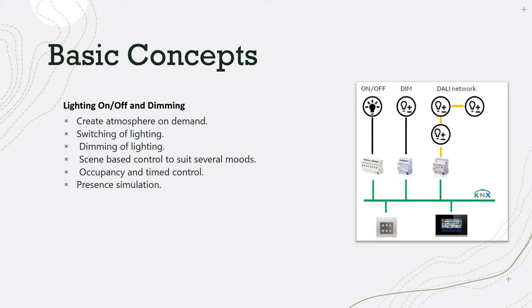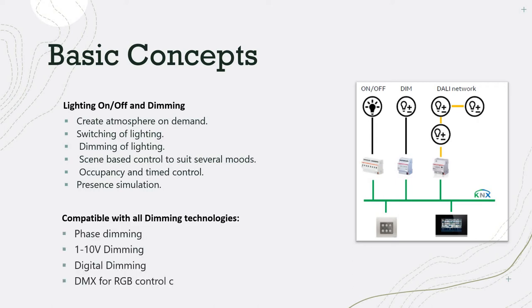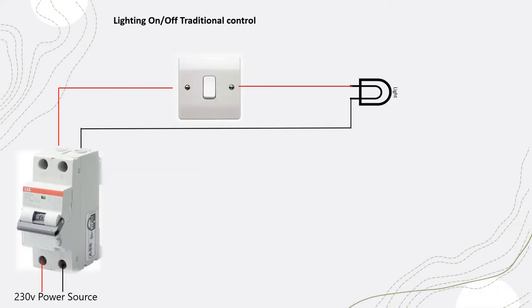Basically, lights can be simple on/off, which you see commonly in traditional houses without home automation, or they can use a dimming control system. Different types of lights can be dimmed. DALI has an addressing concept we'll talk about later. For dimming, we have phase dimming, which is direct 230V driving; 1-to-10V dimming; digital dimming; DMX; and RGB control for lights with different color mixes.